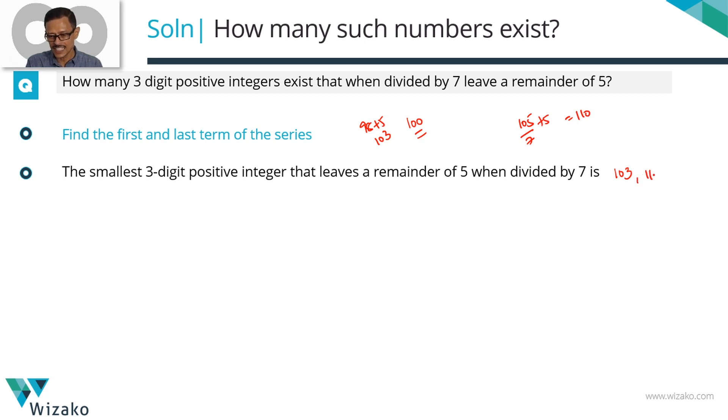So 103 is the first number, 110 is the next number. You probably guessed it right, the next number is going to be 117. So these numbers start from 103 and are in a progression where the common difference between any two consecutive terms is the same, which is equal to 7. So you found out what the sequence is, the first term and the common difference. Let's see if we can deduce what the last term is.